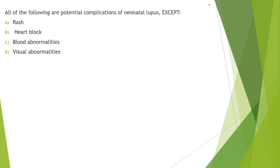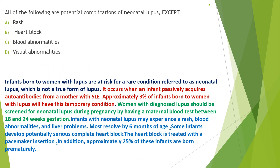To answer our opening question: all of the following are potential complications of neonatal lupus except rash, heart block, blood abnormalities, visual abnormalities. We have said neonatal lupus affects the skin — it causes rash — plus the three H's: heart, hematology, and hepatic. The answer is D — visual abnormalities is not a characteristic of neonatal lupus.